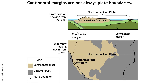Continental margins — the edges of the continents — as shown in both the cross-section and map view, are not always plate boundaries. So continental margins and plate boundaries don't necessarily line up. Let's take a look at how they might line up in the North American continent.